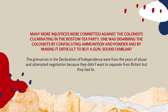Until a person is convicted of a crime, they should not have their rights infringed upon. We have to be careful with these things because public safety is the number one thing governments use to take our rights. Many more injustices were committed against the colonists, culminating in the infamous Boston Tea Party. One of them was disarming the colonists by confiscating ammunition and powder and making it difficult to buy a gun — sound familiar? The grievances of the Declaration came from years of abuse and attempted negotiation, because we did not want to separate from Britain.